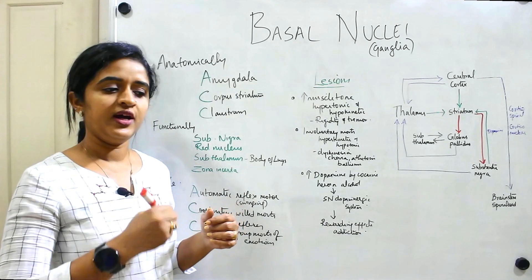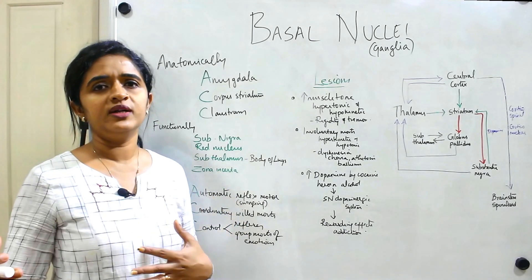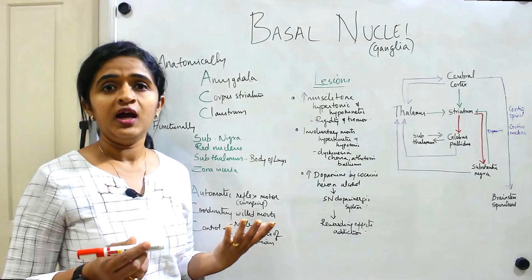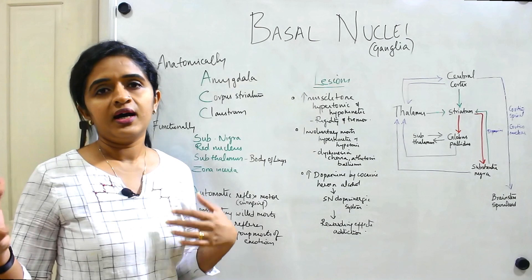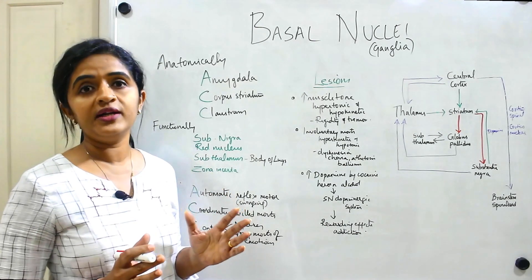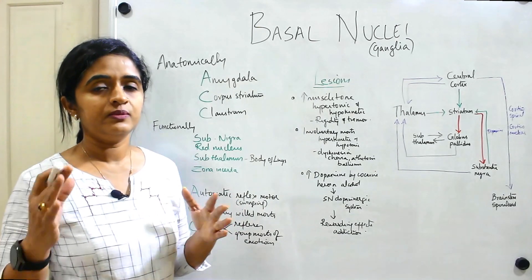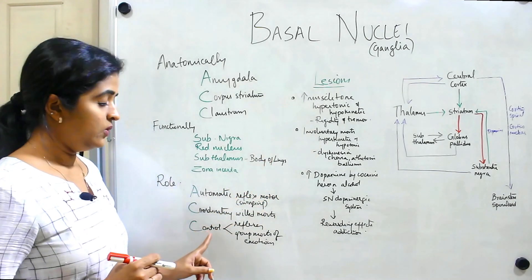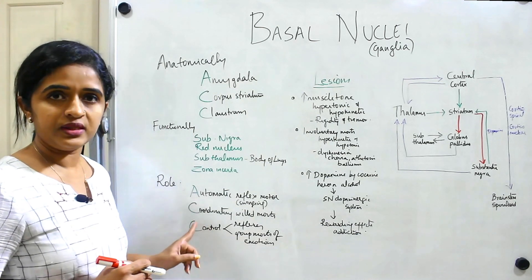The next function is coordinating willed movements. For example, when you are writing, you keep your hand in position and write — it's a coordinated willed movement. You don't need to think 'I have to flex my hand and write like this'; it goes according to your will. The motor activity is performed by the cerebral cortex, but the coordination is done by the basal nuclei.